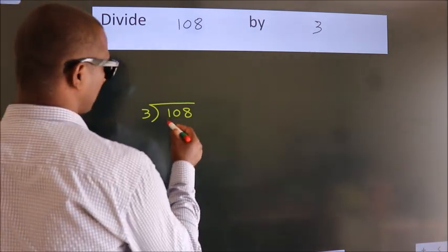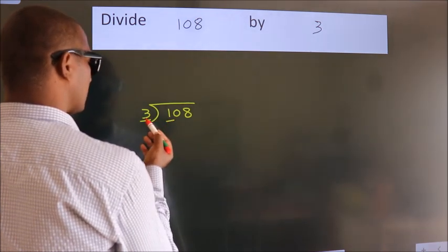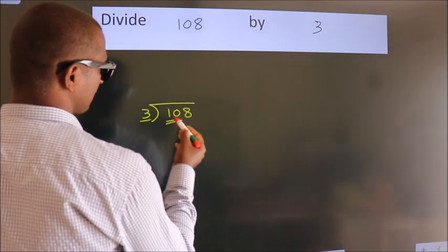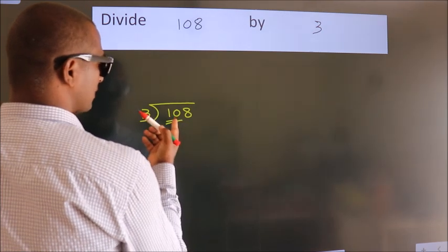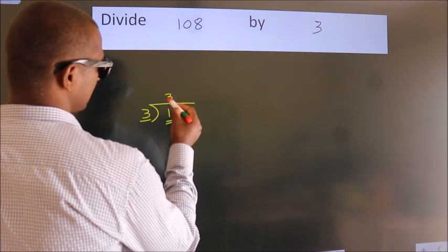here we have 1, here 3. 1 smaller than 3. So, we should take two numbers, 10. A number close to 10 in 3 table is 3 threes, 9.